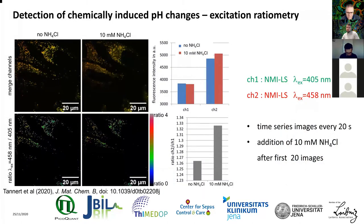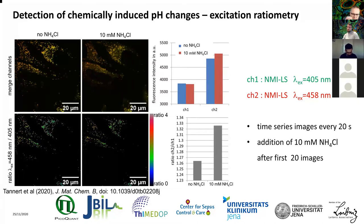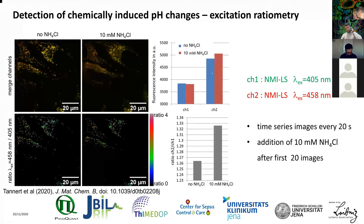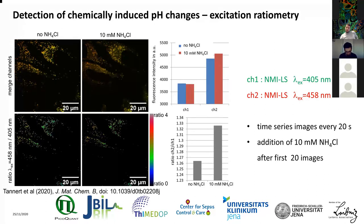We first attempted to track pH changes using excitation ratiometric imaging. We recorded two channels: one excited at 405 nm (shown in green) and one at 458 nm (colored red). In the overlay images before and after ammonium chloride addition, the cells become slightly more red, but the effect is hard to see. The ratio increased a bit, but not much. So in our hands, excitation ratiometric imaging is possible, but the effects are not very pronounced.